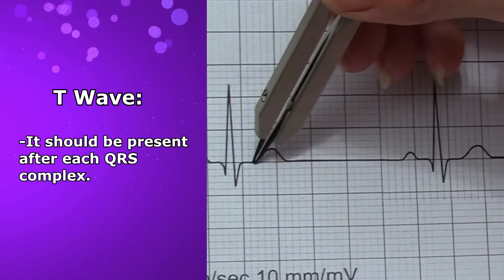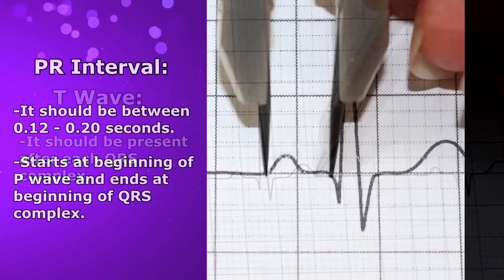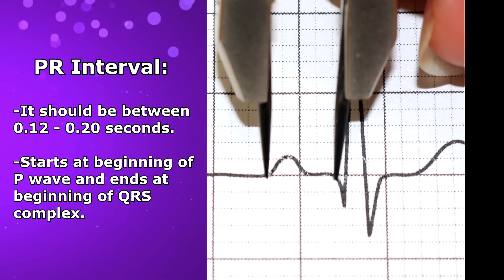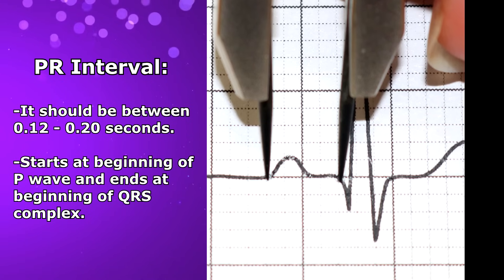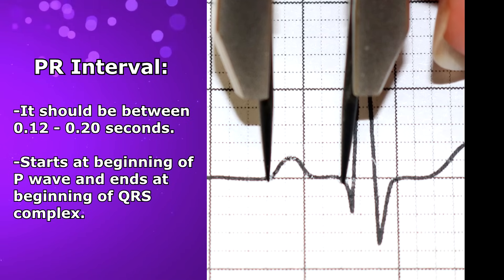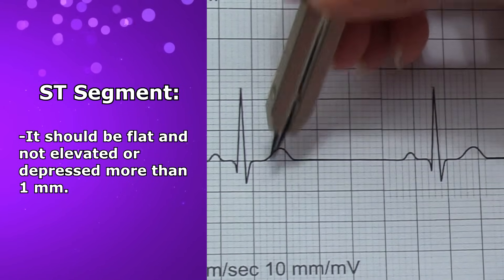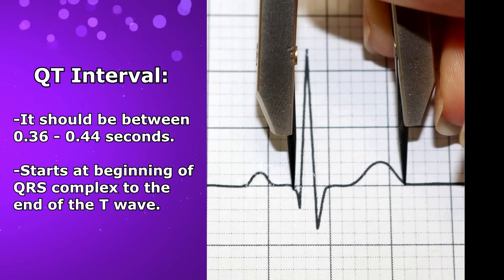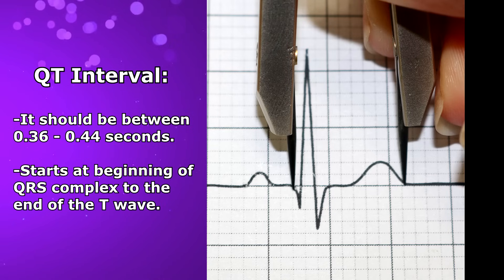Then you want to look at the T wave and make sure that there is one present after each QRS complex. Then look at the extras — the intervals and segments. Look at the PR interval, measured at the beginning of the P wave to the beginning of the QRS complex; a normal PR interval should be between 0.12 to 0.20 seconds. Then look at the ST segment — it should be flat, not elevated or depressed more than one millimeter. The QT interval should be normal, anywhere between 0.36 to 0.44 seconds, measured from the beginning of the QRS complex to the end of the T wave.